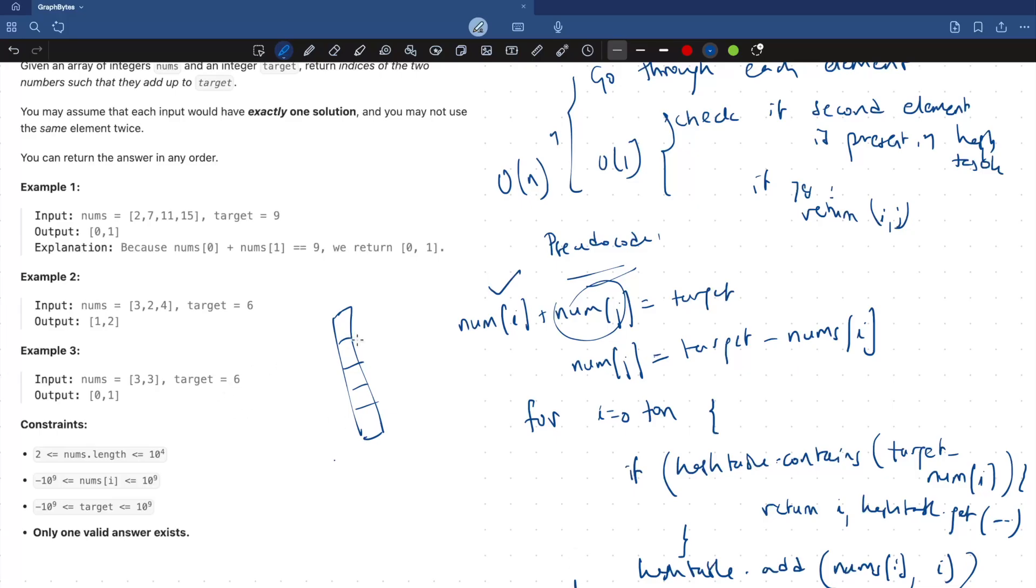Let's see what our logic would be and how our algorithm works. Now initially with 2, the hash table is empty. So, there won't be any second element. Now when we go to 7, we will add 2 to the hash table. And its value would be the index. Now we go to 7. It checks for 9 minus 7, which is 2. And checks the hash table. Now it is present in hash table. So, we just return the index of 7 and the index of 2. This is from hash table. This is current.